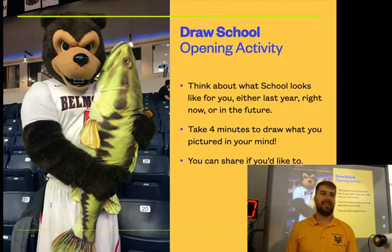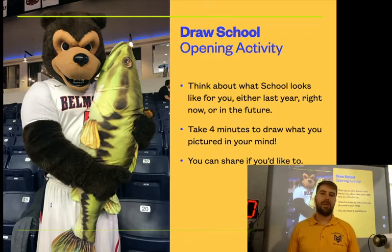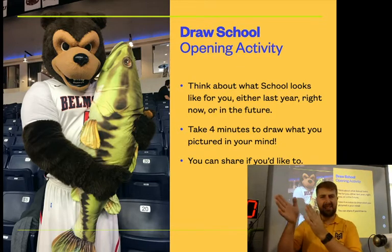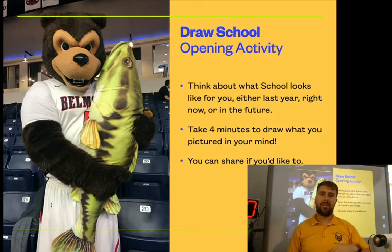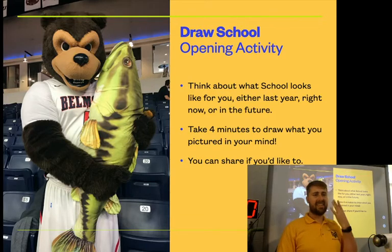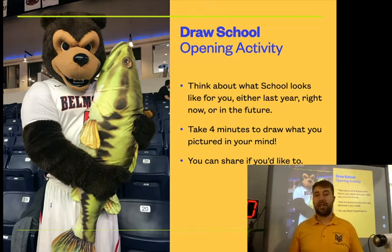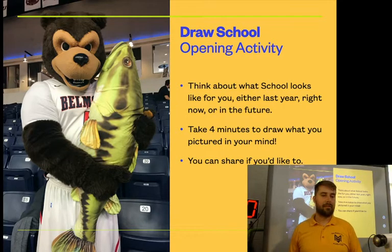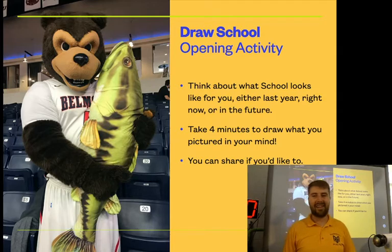Our opening activity for today is to draw a school. Think about what school looks like for you either last year, right now, or in the future. Either when we come back in person or when some people do or even next year. Think about what school looks like. It could be the school building, the classroom, where you're learning, how you're learning. And then take four minutes to draw what you pictured in your mind on paper. You can share it if you want to. We'd love to see it in a discussion post or in a text or email to me. But take four minutes. Pause the video here and draw what you picture school looking like for you. When you're done, unpause the video and we will move on.